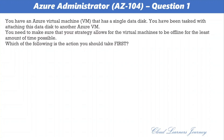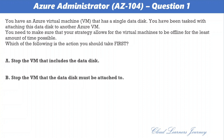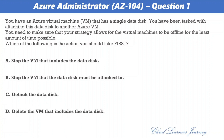Question number one. You have an Azure virtual machine that has a single data disk. You have been tasked with attaching this data disk to another Azure VM. You need to make sure your strategy allows the virtual machines to be offline for the least amount of time possible. The options are: a) stop the VM that includes the data disk, b) stop the VM that the data disk must be attached to, c) detach the data disk, d) delete the VM that includes the data disk. The correct option is: stop the VM that includes the data disk. The reason is to stop the VM first so that disk data is not corrupted — it gets corrupted if a service is writing data while you detach.